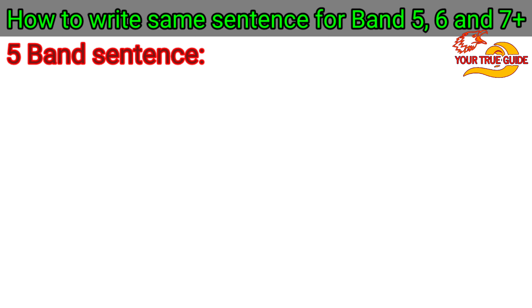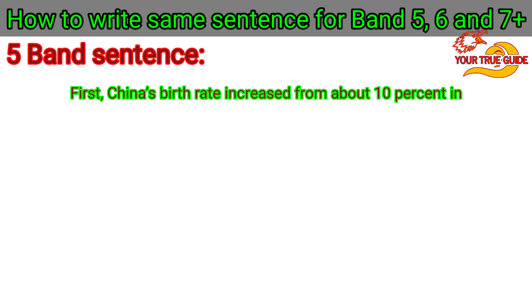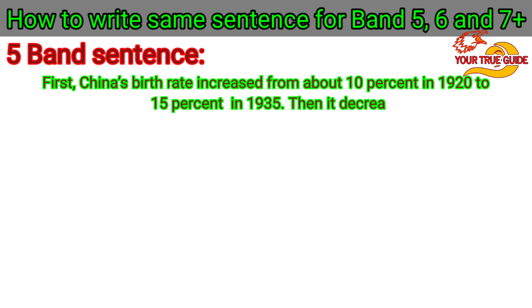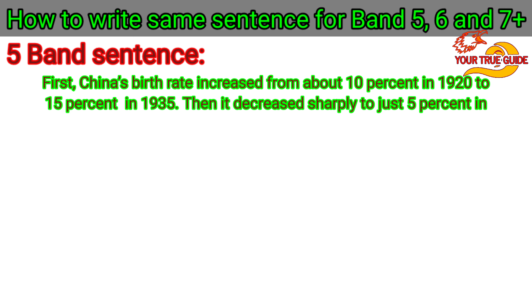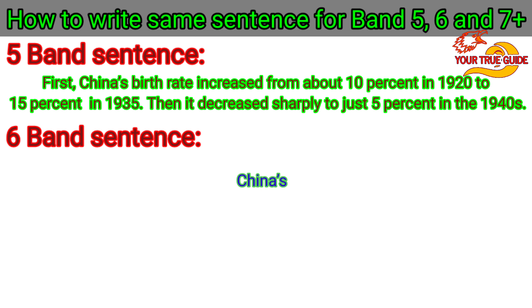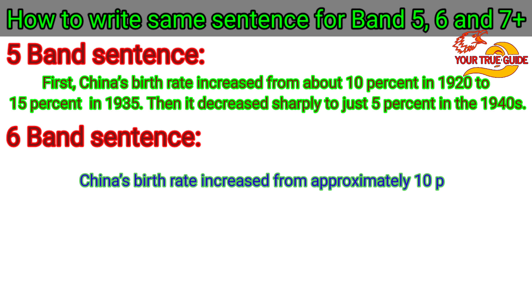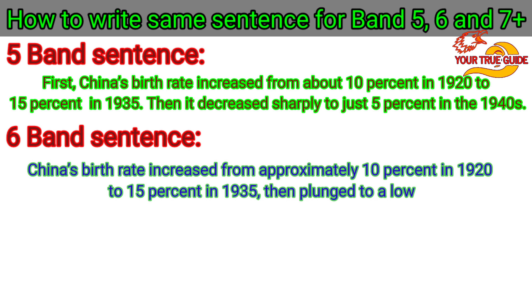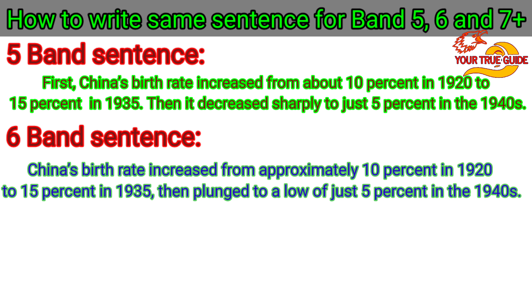The second sentence for band 5 is: 'China's birth rate increased from about 10% in 1920 to 15% in 1935. Then it decreased sharply to just 5% in the 1940s.' We will get 5 bands because here we made two simple sentences. Now we will change its formation and instead of two sentences, we will use a comma and make a single sentence with band 6: 'China's birth rate increased from approximately 10% in 1920 to 15% in 1935, then plunged to a low of just 5% in the 1940s.'